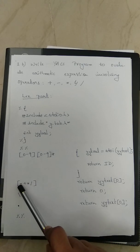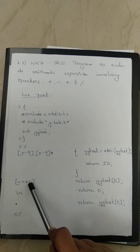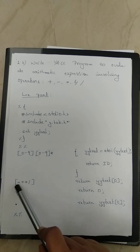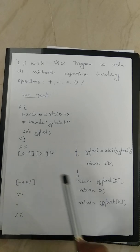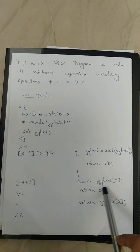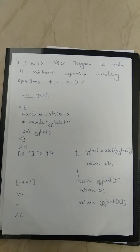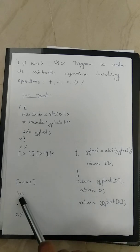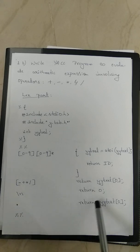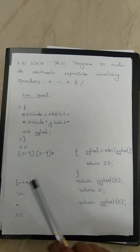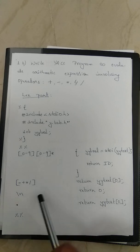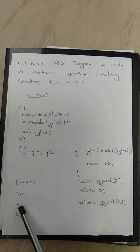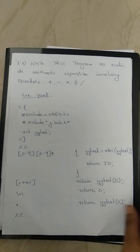Our arithmetic expression may include any one of the operators — plus, minus, multiplication, and division — so in a character class we write them in order. If any operator is encountered in the input, the matched string is passed to YACC. We also check the newline character, which returns zero. The dot operator matches any other token and returns that token. This ends with %% to close the LEX rules section.